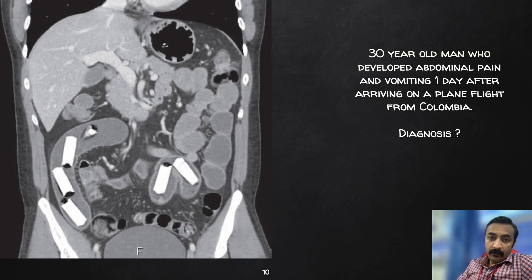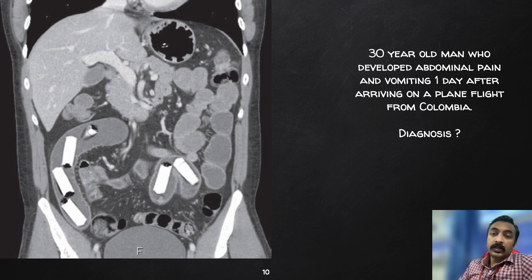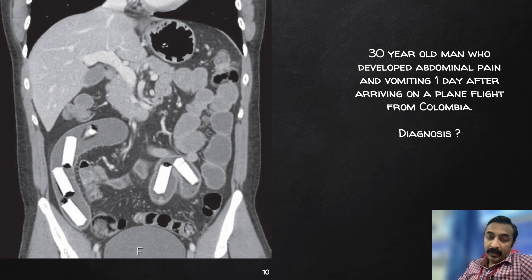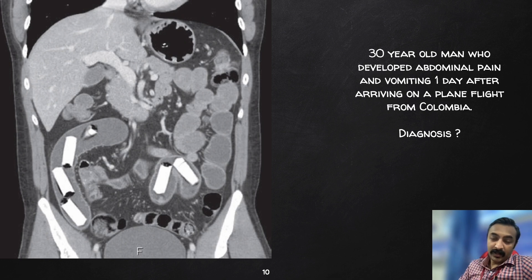Here we have a CT abdomen of a 30-year-old man who developed abdominal pain and vomiting one day after arriving on a plane flight from Colombia — though it could be anywhere in the world. So what could be the diagnosis? You can see something very interesting in this image.